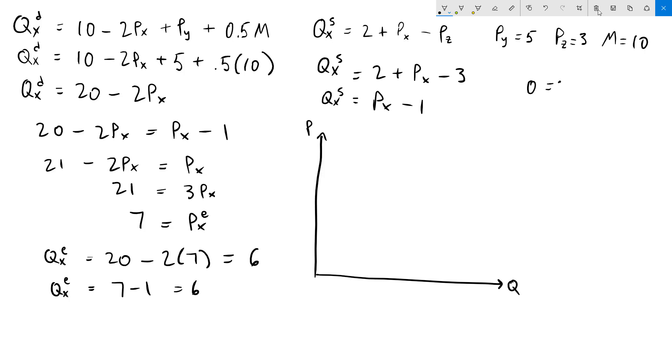So if we set 0 equal to 20 minus 2Px, we can see that Px would have to be 10. That tells us that the intercept is going to be 10. Now, if we plug in 0 for the price in the demand function, then we simply get 20.